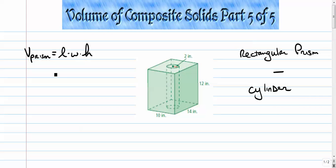Rectangular prisms are really easy volume: length times width times height, so it's 10 times 14 times 12. We're going to subtract the volume of the cylinder.